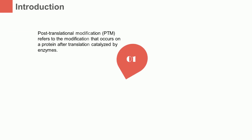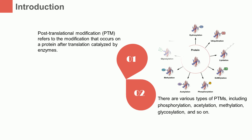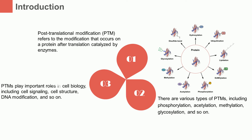Post-translational modification refers to the modification that occurs on a protein after translation. There are various types of post-translational modifications, such as phosphorylation, acetylation, methylation, glycosylation, and so on. Post-translational modifications play important roles in cell biology, like cell signaling, cell structure, and DNA modification.